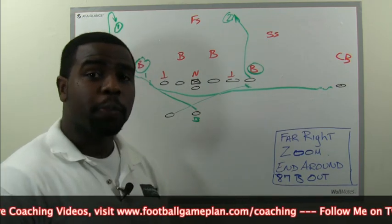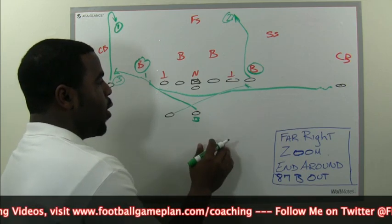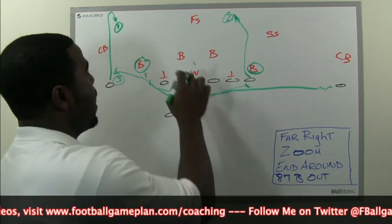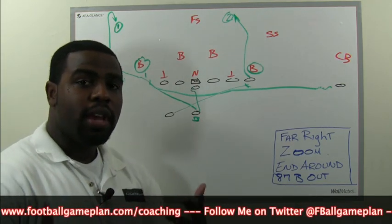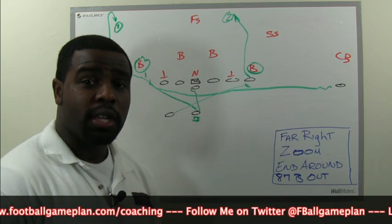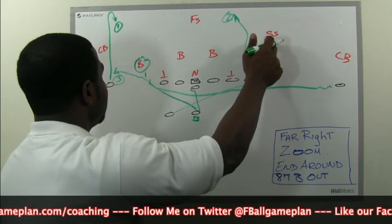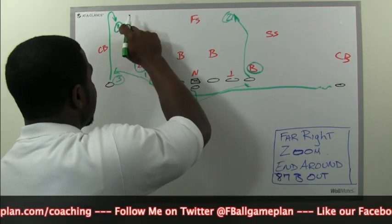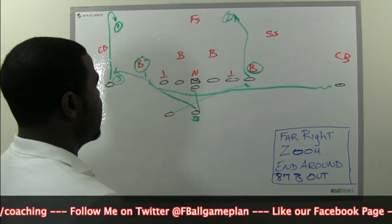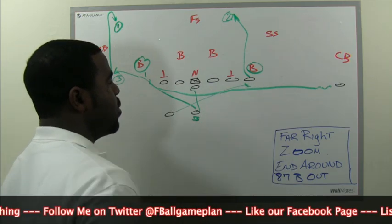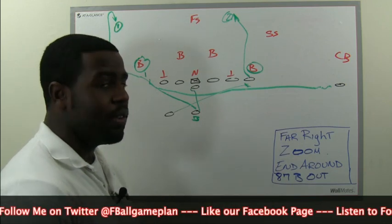87 B Out — your first read is the comeback, your second read is the backside post, and your safety valve is the B back out in the flat. You see how the sequence of the first play gives you the opportunity to set up the second play. Your quarterback reverses out, drops back, and can hit one, two, or three. When you sequence your plays, you give yourself the flexibility to confuse the defense by making sure everything looks the same — the motion, the tight end stalking the strong safety, all of it.